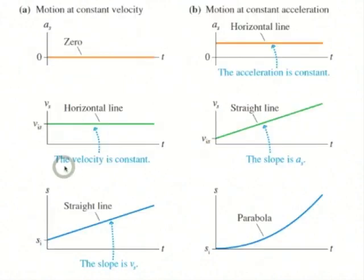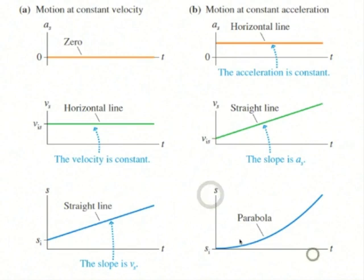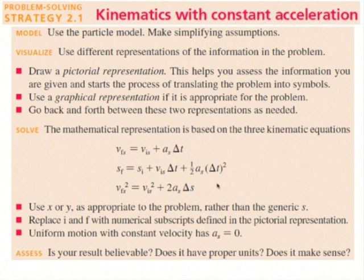Here's a comparison of motion with constant velocity versus constant acceleration. For constant velocity: the position versus time graph is a straight line, the velocity versus time graph is a horizontal line, and the acceleration versus time graph is zero. For constant non-zero acceleration: the velocity versus time graph is a straight line, and the position versus time graph is a parabola. The problem-solving strategy for kinematics problems is to model, visualize by drawing diagrams and graphs, and use the three kinematic equations. For uniform motion with constant velocity, a equals zero, which simplifies all equations.